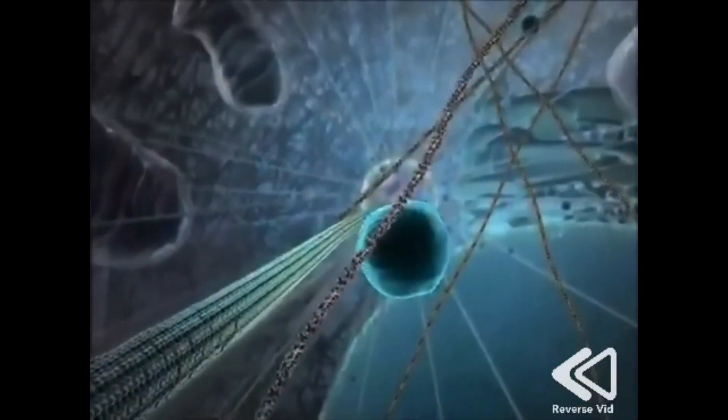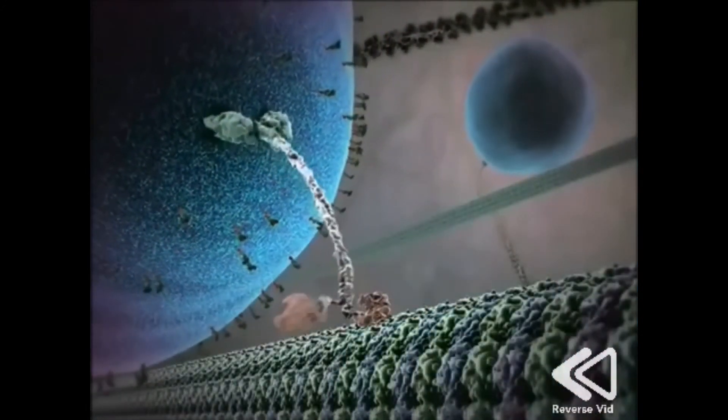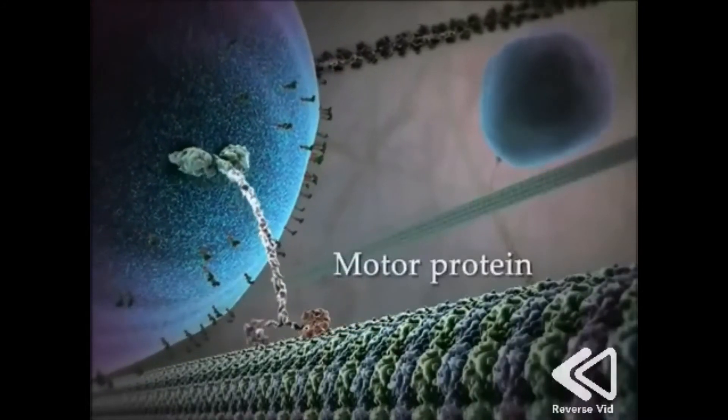This mainly consists of organelles from the axon or axon terminal that need to be recycled, or vesicles containing signaling molecules that tell the cell body what the axon needs.